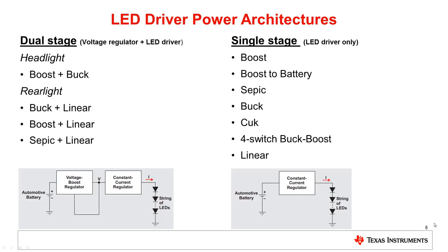In automotive exterior lighting applications, the LED driver power architectures can be split into dual stage and single stage. The dual stage architecture consists of a voltage pre-regulator followed by the LED drivers. In single stage architectures, the LED drivers are supplied directly by the battery voltage. Both architectures can be found in front light as well as rear light applications.